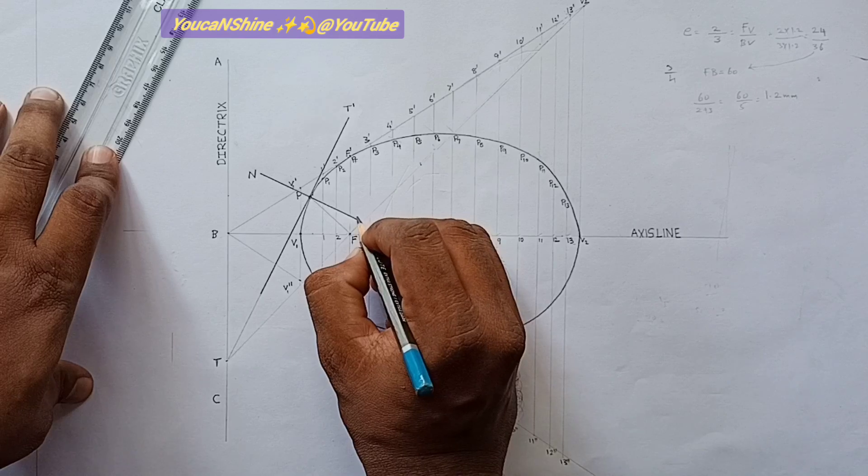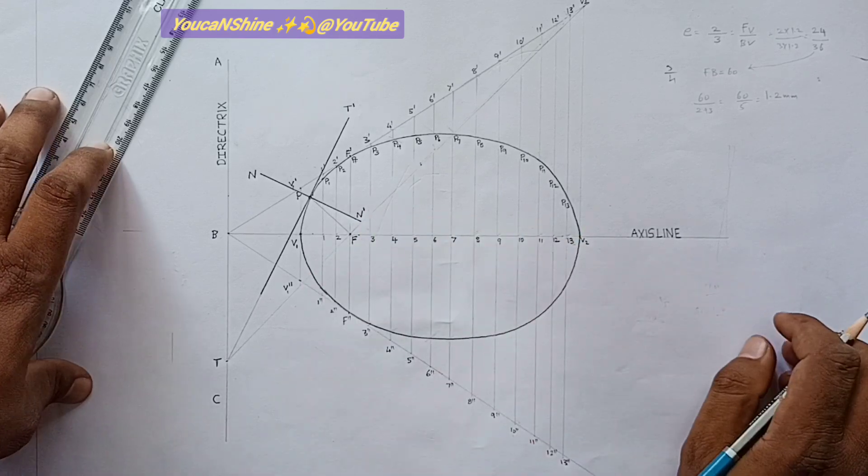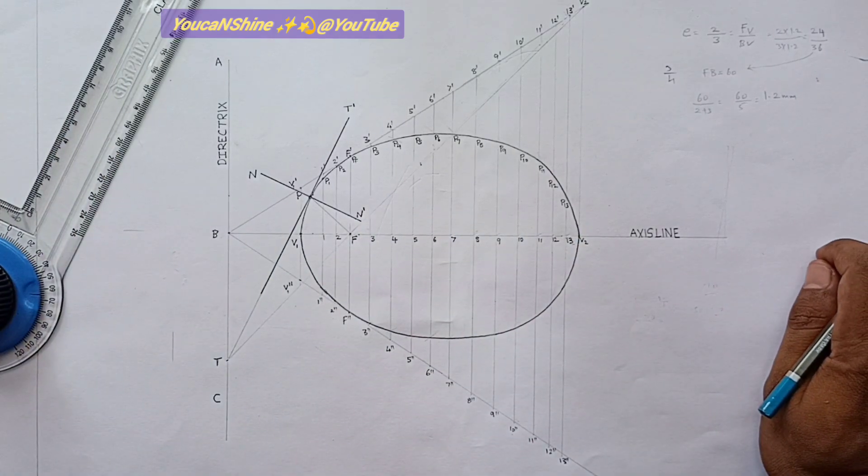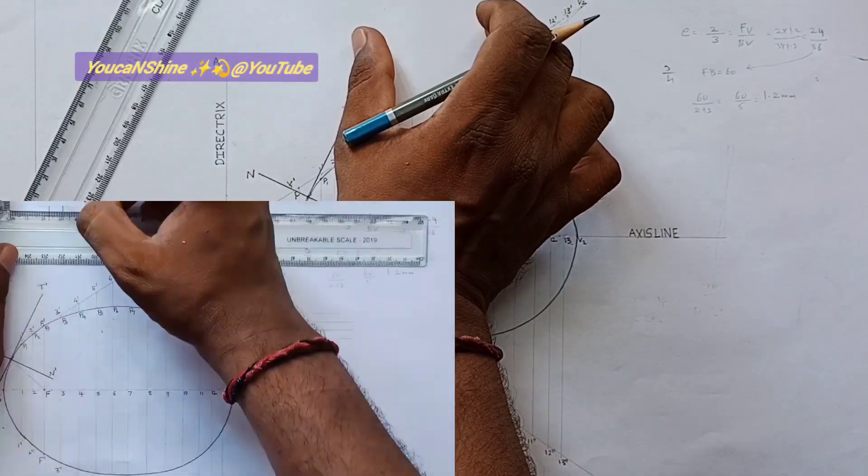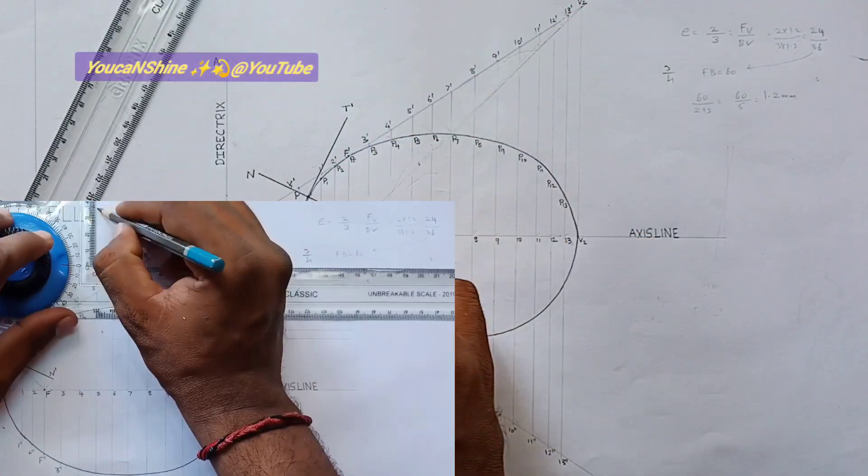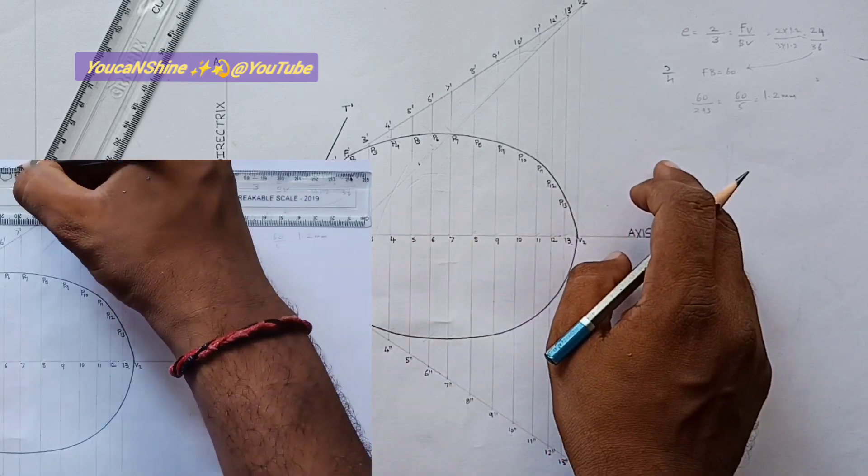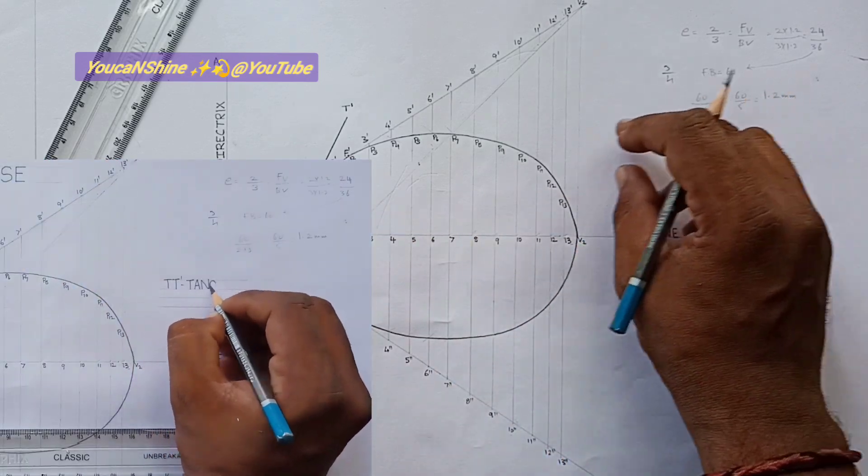What we are using, normal N. Fantastic. Super. You can put an ellipse on the top of the page. And then T T' tangent. You can put it 5 or 6mm.